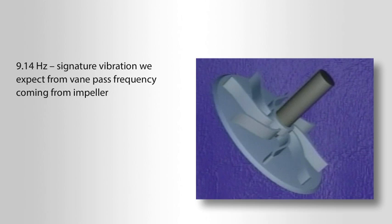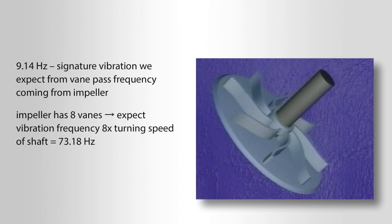The signature vibration we would expect from a pump is a vane pass frequency coming from the impeller. Since this impeller has eight vanes, we would expect a vibration frequency at eight times the turning speed of the shaft, which equals 73.18 Hz.